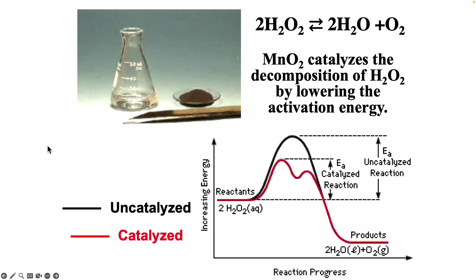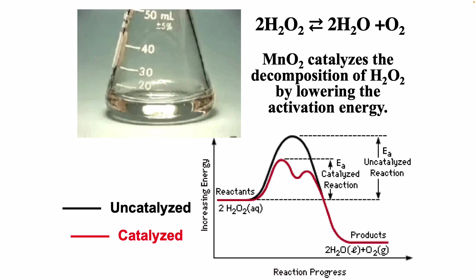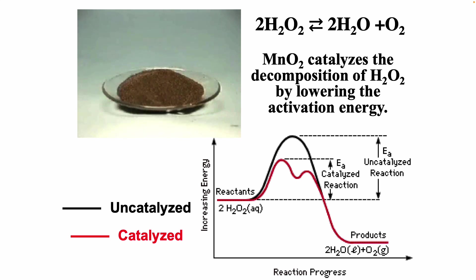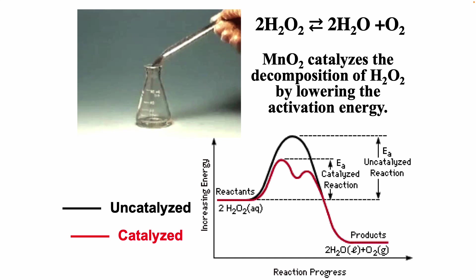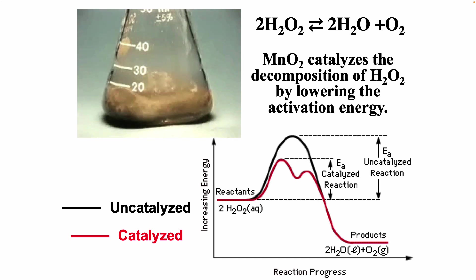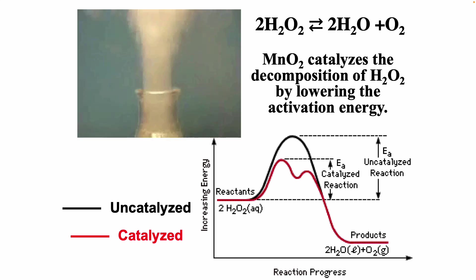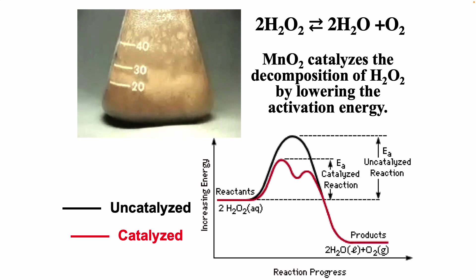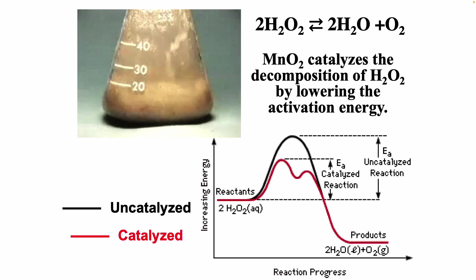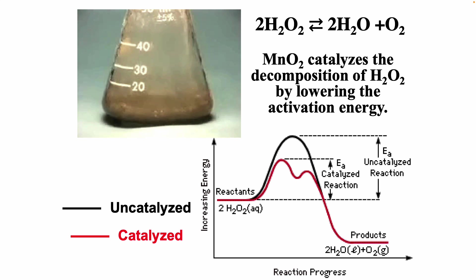Hydrogen peroxide in water decomposes slowly at room temperature. In the presence of manganese dioxide, however, the decomposition occurs much more rapidly. The reaction produces oxygen and water. The manganese dioxide is not consumed or otherwise altered by the reaction — it serves only as a catalyst and makes the reaction occur more rapidly.